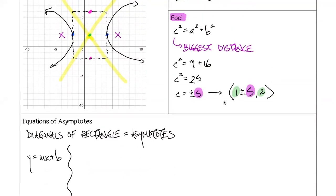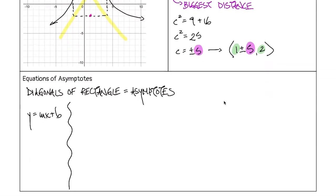Instead, we want to start using point-slope form: y − y₁ = m(x − x₁). I know it looks longer, but it's actually easier in this case. We'll be using this in Calc 1 for sure. It's more useful, so even if it scares you, get used to it.